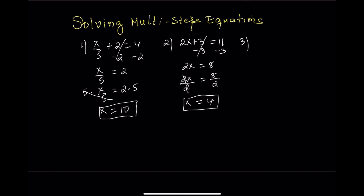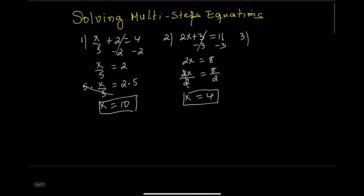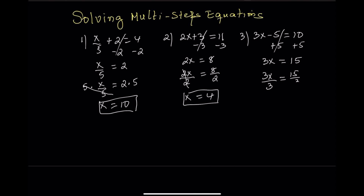Equation 3: 3x minus 5 equals 10. Step 1: add 5 to both sides — 3x equals 15. Step 2: divide both sides by 3 — x equals 5.